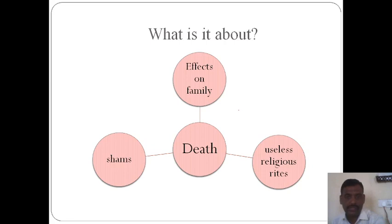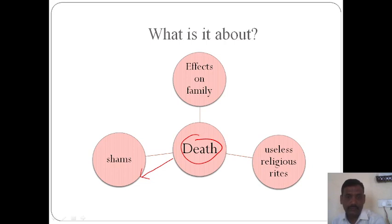After going through the major events, we can find the central ideas and themes in this play. Death is the central theme. We also see the pretensions of people — the neighbors do not wait to complete the rites of Baurav and leave Nana all alone. The play also presents hypocritical and useless religious rites, and we see the effects of death on Baurav's family as it begins to disintegrate. Thank you.